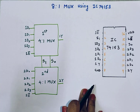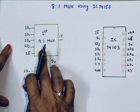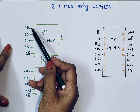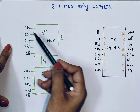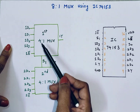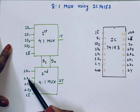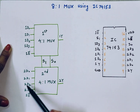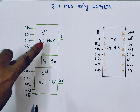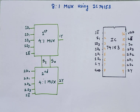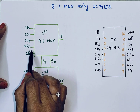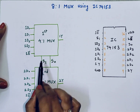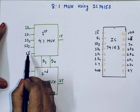In case of a 4-to-1 multiplexer, the data inputs are 4: 1D0, 1D1, 1D2, 1D3 for the first 4-to-1 multiplexer, and 2D0, 2D1, 2D2, 2D3 for the second 4-to-1 multiplexer. Since it is a 4-to-1 multiplexer, the number of select lines is 2 (since 2 raised to 2 = 4): S0 and S1.